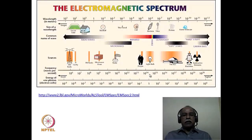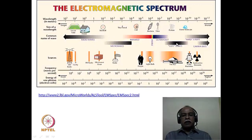Here is an electromagnetic spectrum dealing with the various frequencies and various energies of the photons in the different regions of the electromagnetic spectrum. The regions are labeled here as radio waves, microwaves, infrared waves, visible region, ultraviolet region, the soft and hard x-rays, and finally the most powerful energetic gamma rays on the right-hand side of the spectrum.